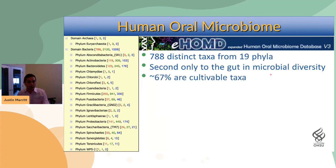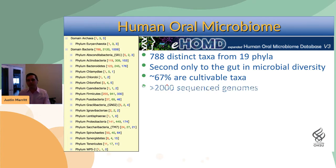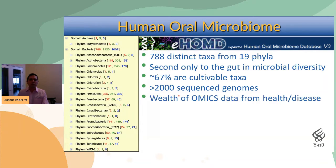However, unlike the gut, most of the bugs in the oral cavity have been grown in the lab — about two-thirds of them. We have lots of different sequenced genomes, and there are a wealth of omics studies looking at various states of health and disease.